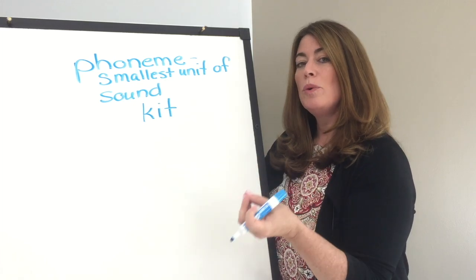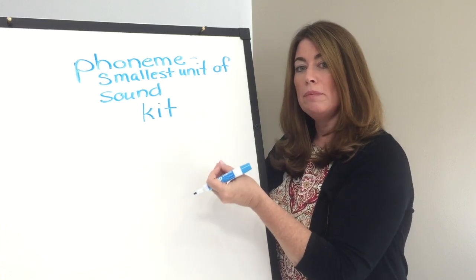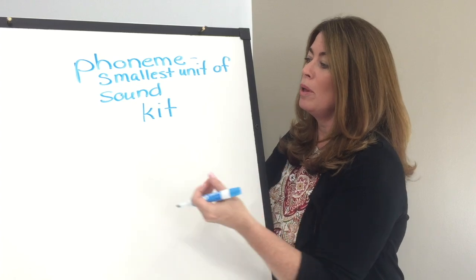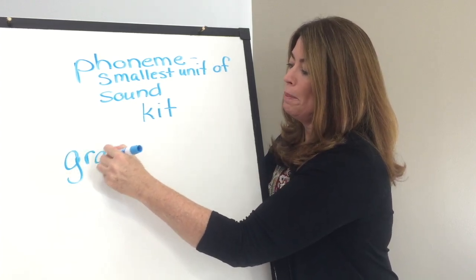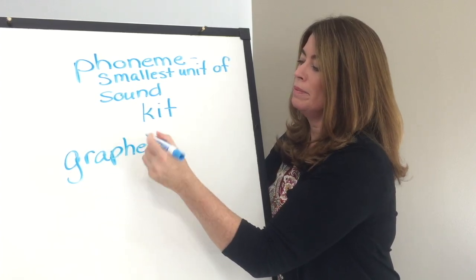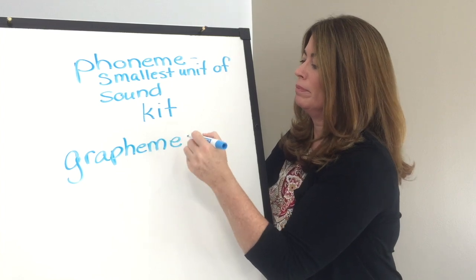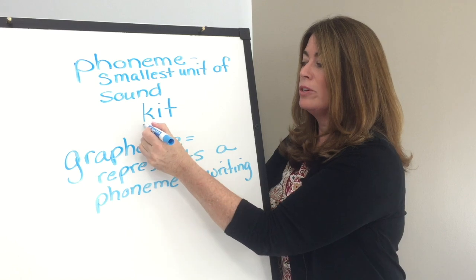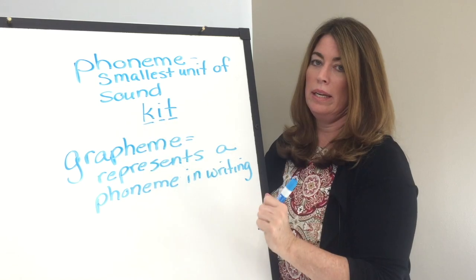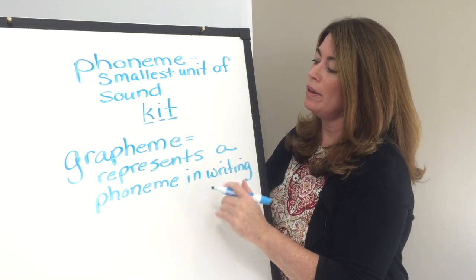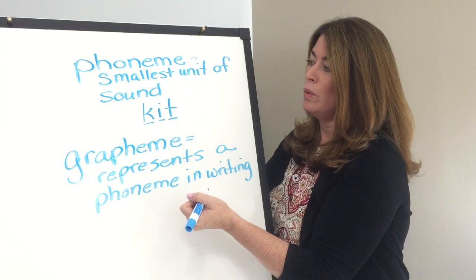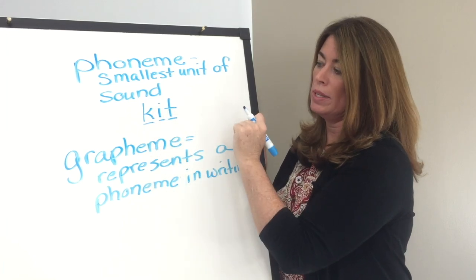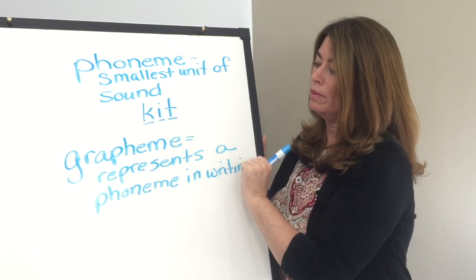When we're spelling, we take a word that we can say and we take those phonemes — those sounds — and convert them into graphemes. Graphemes are the smallest unit of writing. A grapheme represents a phoneme. So where the sounds are k, i, t, the letters are also k, i, t. There are three sounds and three graphemes.